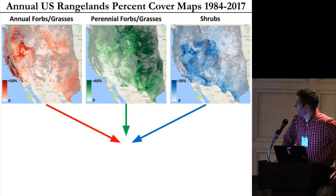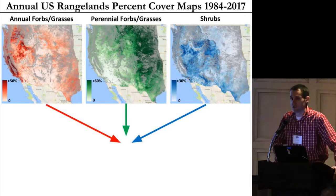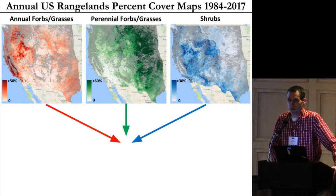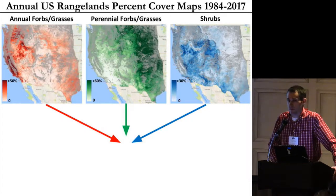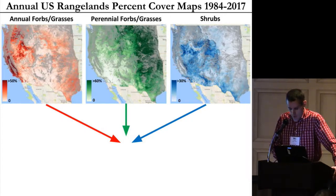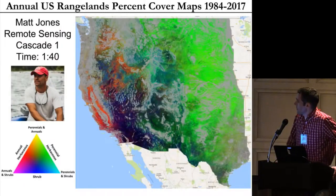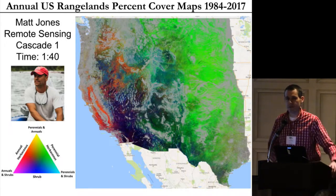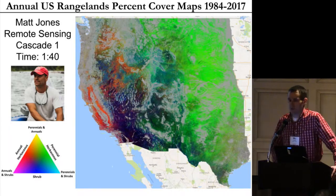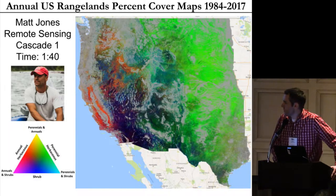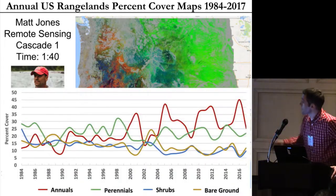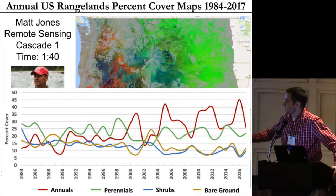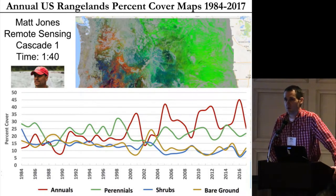One of these projects is Matt Jones — I'll give him a plug here — he's giving a talk this afternoon. He has been utilizing this to map continuous rangeland cover across the United States from the early 80s up until present day. Looking at annual forbs, perennial forbs, shrubs — continuous cover from zero to 100%. You can combine all those things and get a bigger view of the landscape. You can also track changes in these plant functional groups through time going all the way back to the 80s. All of this is possible because of the processing power we're leveraging.